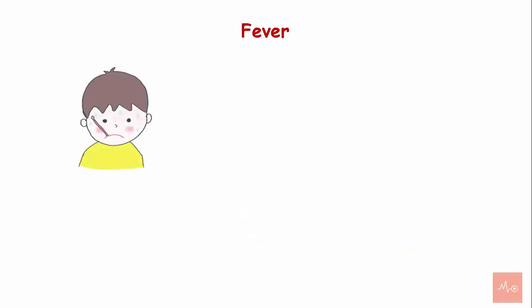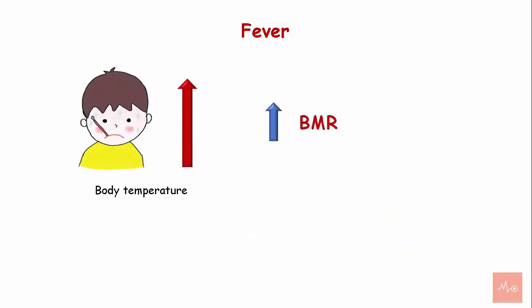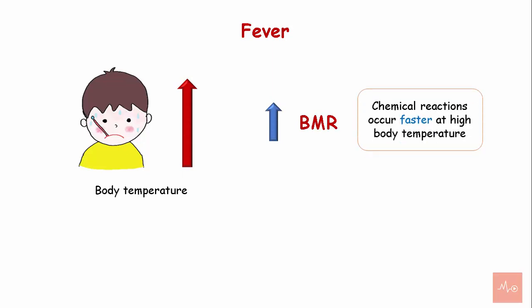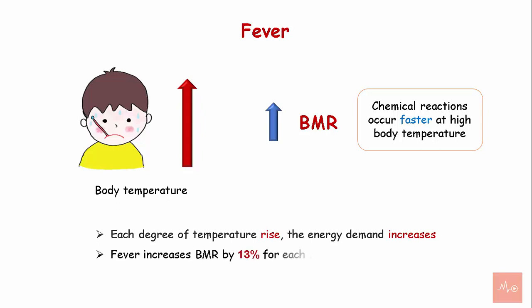Fever. An increase in body temperature increases the BMR. Chemical reactions occur faster at high body temperature, and with each degree of temperature rise, the energy demand increases. Fever increases the BMR by 13% for each 1 degree Celsius rise.